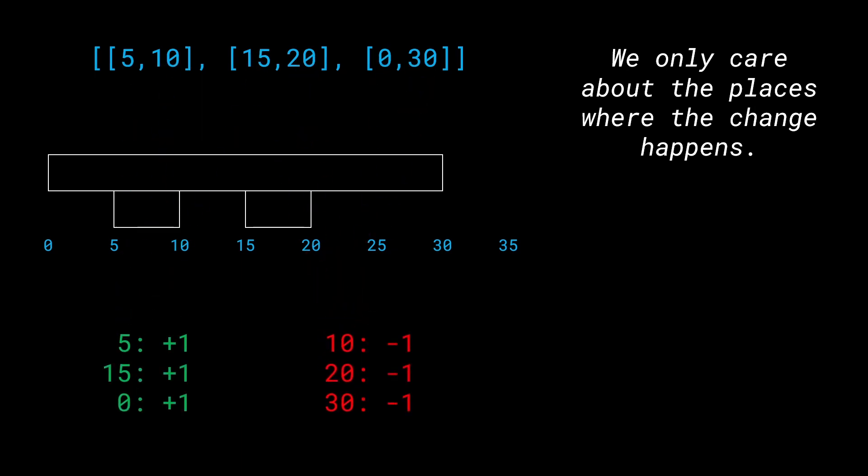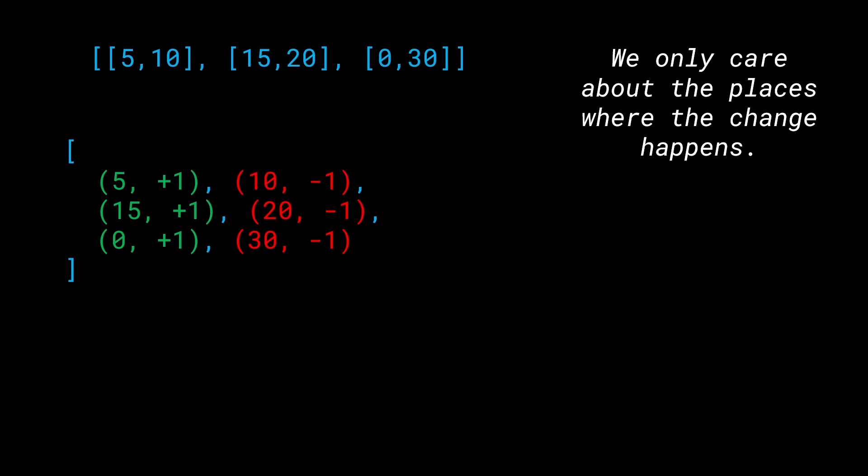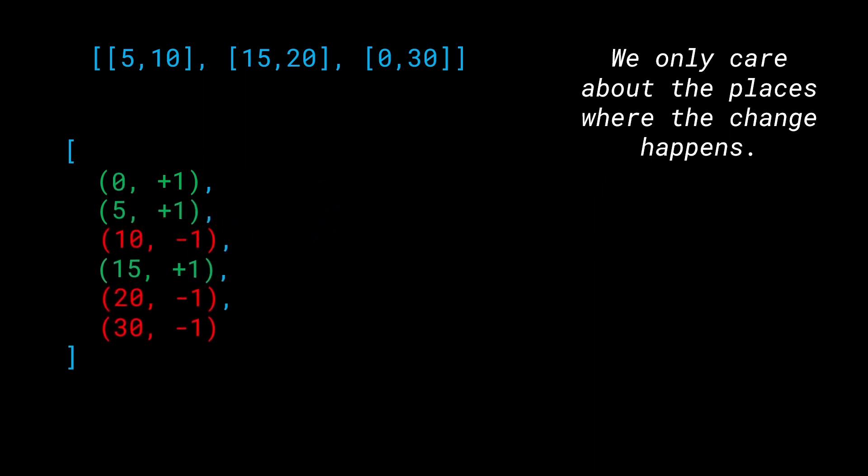We'll write this down formally. At times 5, 15, and 0 — all starting times — we assign a +1, meaning we require one more meeting room. We pick out all starting indices and assign them +1. Similarly, we assign -1 to times 10, 20, and 30 — all the ending times — meaning at time 10, one meeting has ended and we require one fewer room. We create a tuple of (time, change). The next step is to sort all of these by time: 0, 5, 10, 15, 20, 30.